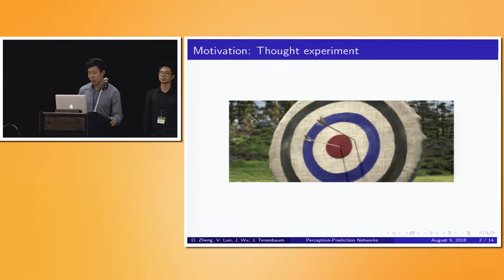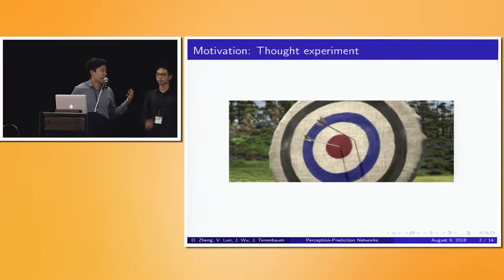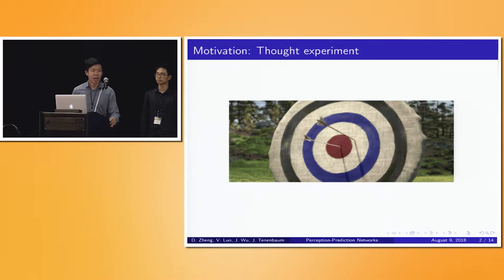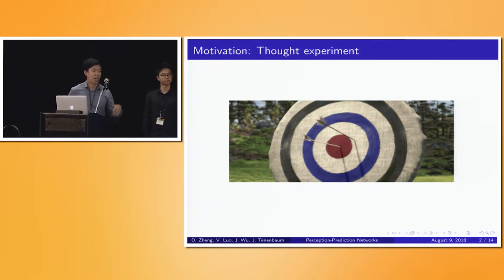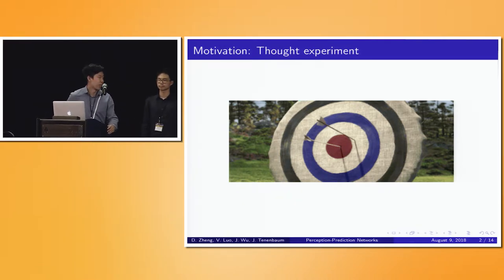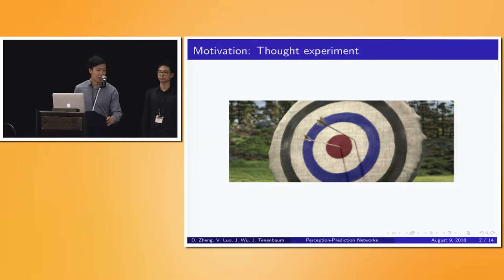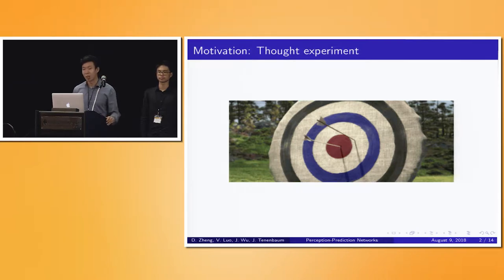I want to start off with a motivational thought experiment. Imagine we're in the medieval era and we're a witness observing an archer shooting arrows of different sizes and shapes. Let's say we didn't have any understanding of the laws of physics. I would claim that over time through observation alone, what we can do is begin to intuit certain properties about the arrow that govern the dynamics of the arrow and help us explain and predict its trajectory — such properties as the arrow's mass or the arrow's drag coefficient. This process of discovering object properties from observational data alone, we're going to call this task unsupervised property inference, and that's what we're going to be discussing today.